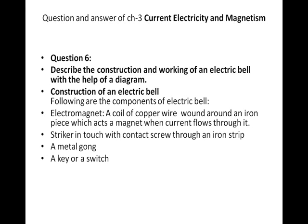Question number 6: describe the construction and working of an electric bell with the help of a diagram. Again, you have to make a diagram of the electric bell and then explain the steps. The following are the components of the electric bell. Electromagnet: a coil of copper wire wound around an iron piece which acts as a magnet when current flows through it — that is the reason the name given to it is electromagnet.